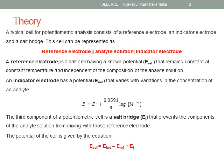A typical cell for potentiometric analysis consists of one reference electrode, one indicator electrode and a salt bridge. Commonly used reference electrodes are calomel electrode and silver-silver chloride electrode. Indicator electrodes are classified as metallic electrodes or membrane electrodes.